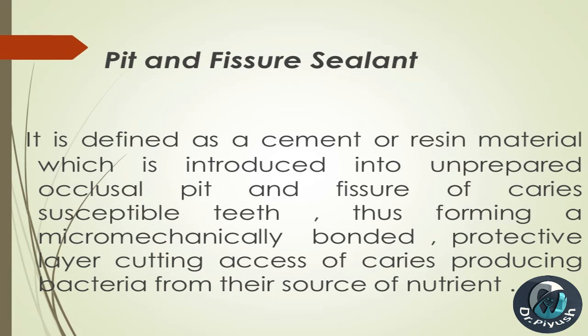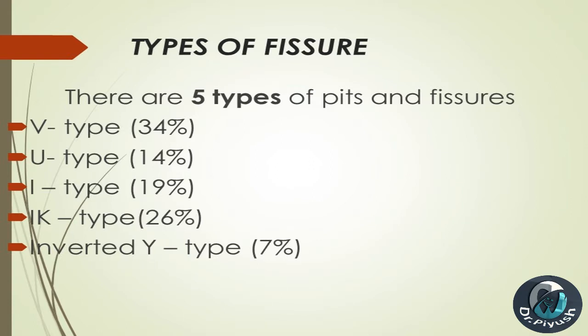The sealant cuts off access of caries-producing bacteria from their source of nutrients. There are five types of pits and fissures: V-type (34%), U-type (14%), I-type (19%), IK-type (26%), and inverted Y-type (7%).